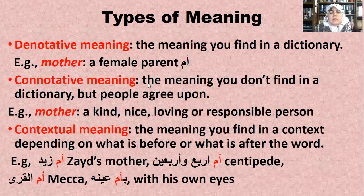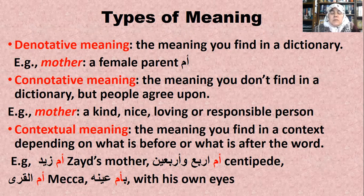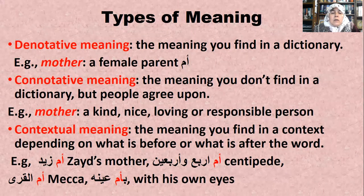The connotative meaning is the meaning you don't find in a dictionary but people agree upon. For example, if you take the same word 'mother' and ask anybody what it brings to mind, usually it brings a kind person, a nice, loving, or responsible person, probably the cook or the nurse.